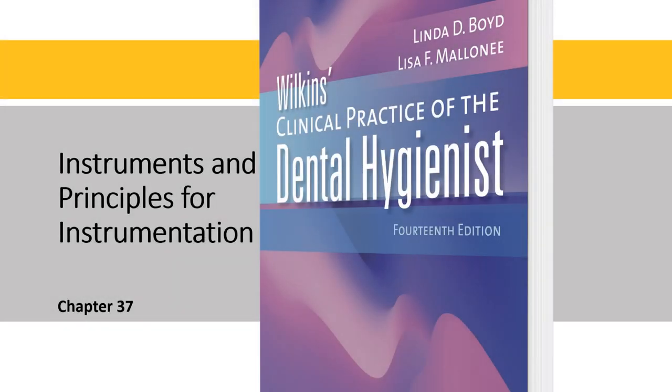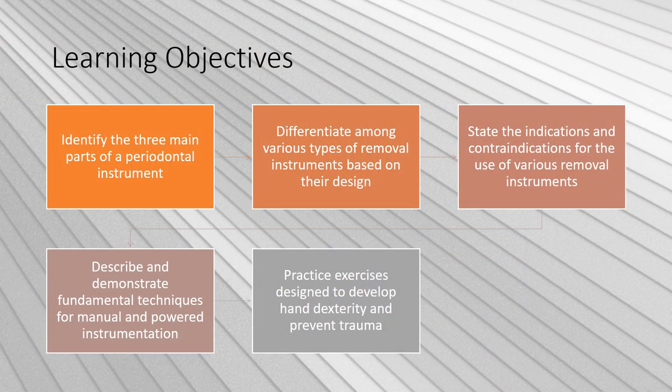We are talking about instruments and principles for instrumentation, Chapter 37. To identify the three main parts of a periodontal instrument, differentiate among various types of removal instruments based on their design, state the identification and contraindication for the use of various removal instruments, describe and demonstrate fundamental techniques for manual and powered instrumentation, and practice exercises designed to develop hand dexterity and prevent trauma.